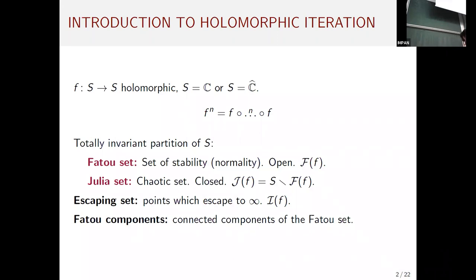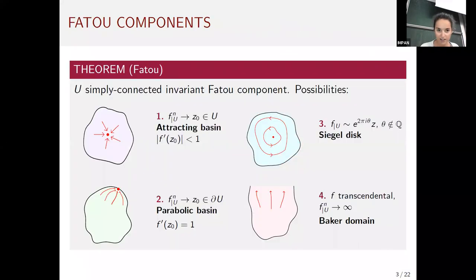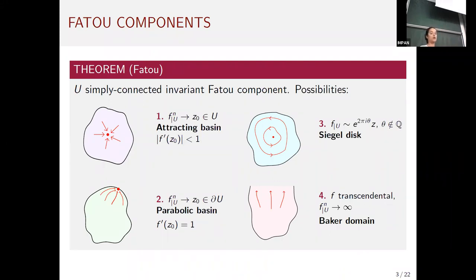We consider a holomorphic function, which can be either an entire function or a rational function. As usual, we consider the Fatou set, the Julia set, and the escaping set. More concretely, we deal with Fatou components, which are the connected components of the Fatou set. We deal only with simply connected and invariant Fatou components, which can be classified into four types: attracting basins, parabolic basins, Siegel discs, and Baker domains.